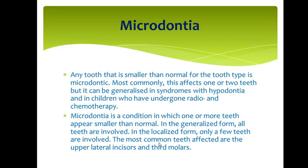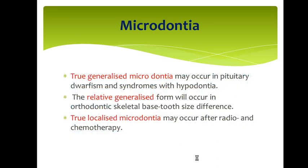To revise: microdontia is when one or two teeth appear smaller than normal. In the generalized form, all teeth are involved. In the localized form, only a few teeth are smaller than normal. The most commonly affected teeth are the upper lateral incisors and the third molars.